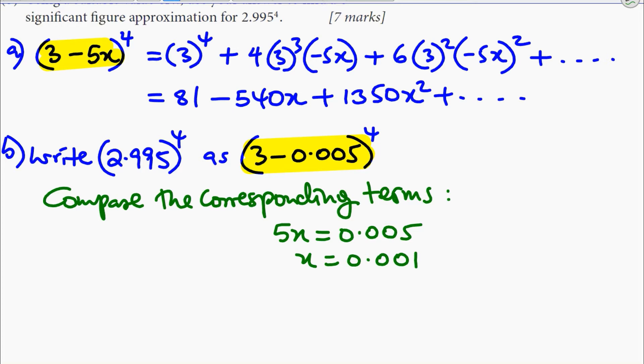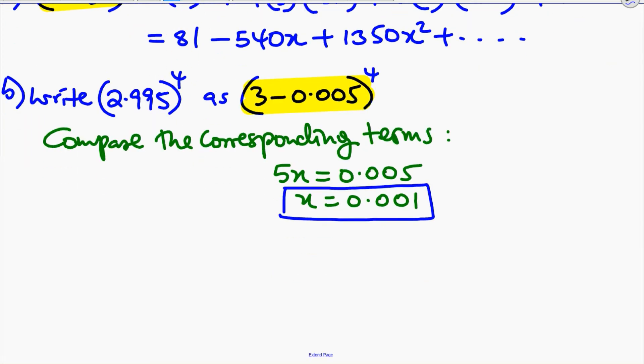So if we have x as 0.001, it's actually easier for us to find an approximation of 2.995^4 using our expansion. What we're going to do is substitute x = 0.001 into the expansion.